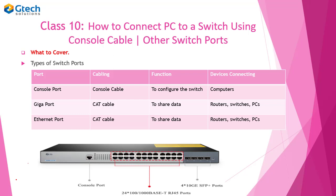Before we do that, let's understand some of the various parts that are in a switch — the types of switch ports. There are three types of ports in a switch. The first port is a console port. The second port is a gigabit Ethernet port or giga port. The third port is an Ethernet port. We are going to understand what cabling is used to connect these various ports, the function of each port, and the devices that can connect to these ports.